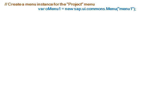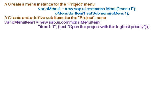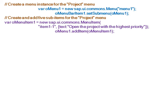For the Project item, we will create a menu. The constructor is new sap.ui.commons.menu. As Project is menu bar item one, we will add this menu as a sub-menu to the Project menu. For this project menu, we will create and add five sub items. The first menu item has the text 'open the project with the highest priority', and we add this first menu item to the project menu.